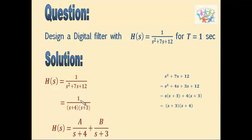So we will get H(s) as 1 by s plus 4 into s plus 3. Now we can further simplify by using the partial fraction method. So we will get A by s plus 4 plus B by s plus 3.